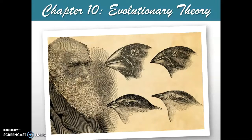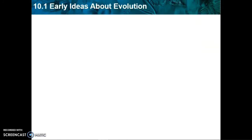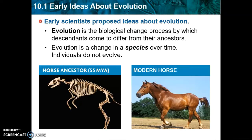Today we're talking about chapter 10, which is the development of evolutionary theory. In this video we're focusing on sections 1 through 3, and in the next video in the series we will finish up the rest of the chapter. We're going to talk first about some of the scientists that proposed early ideas about the theory of evolution, but before we do that we need to define what evolution actually is.